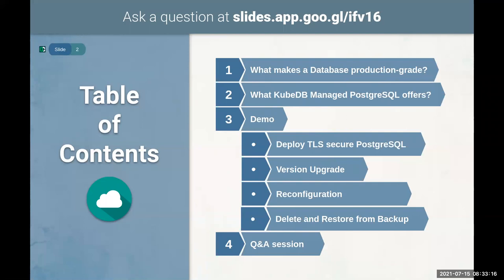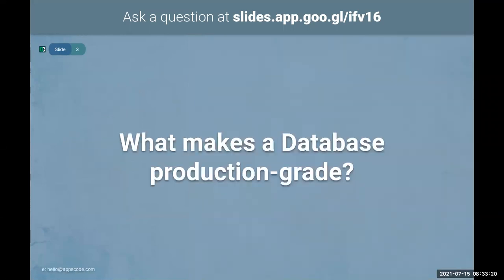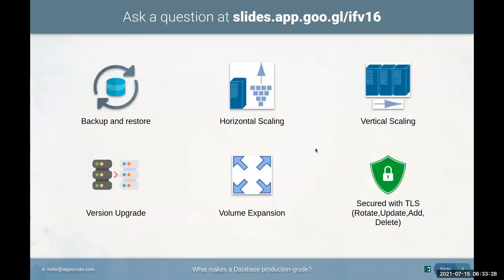The first question is: what makes a database production-ready? To make a DB production-ready we need features like backup and restore to handle unexpected disasters, horizontal scaling to add or remove nodes from our cluster, vertical scaling to increase or decrease CPU or memory, version upgrading to update from an old version to the latest.